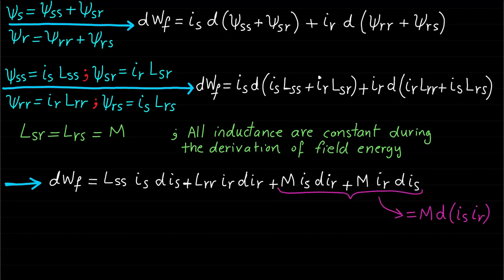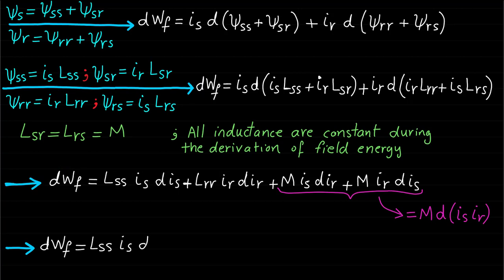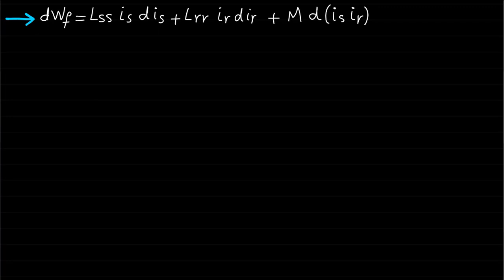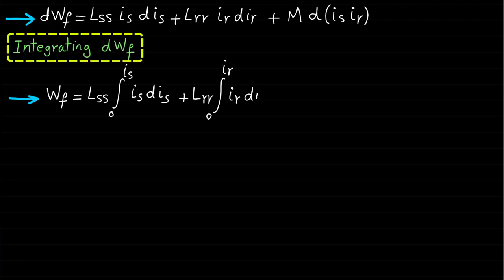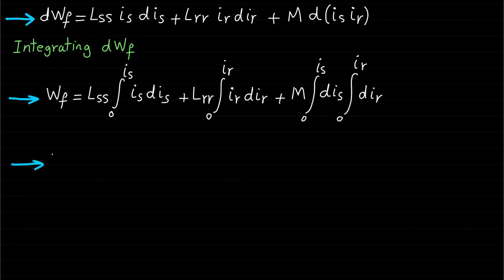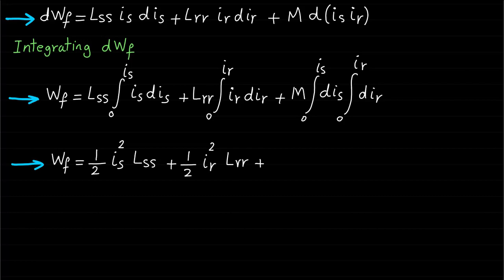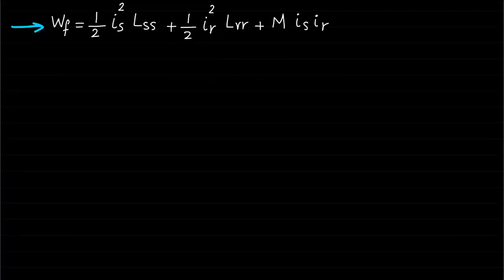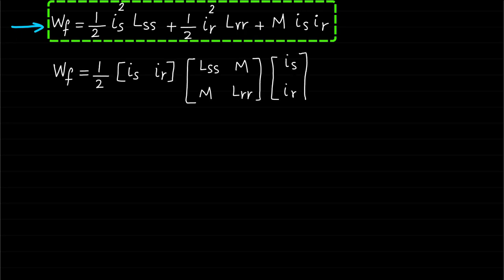Therefore, after some simplification and mathematical manipulation, the change in field energy DWF can be represented as: DWF = LSS·Is·dIs + LRR·Ir·dIr + M·d(Is·Ir). By integrating the change of field energy DWF, the field energy WF equals: WF = ½Is²·LSS + ½Ir²·LRR + M·Is·Ir.